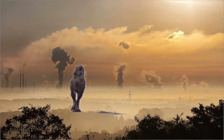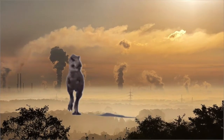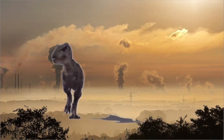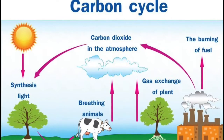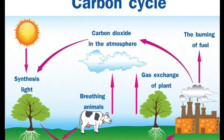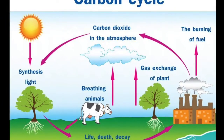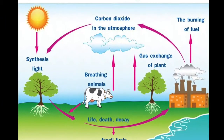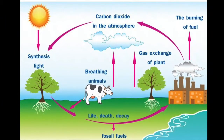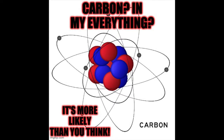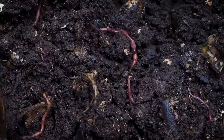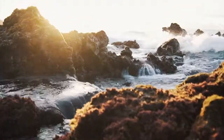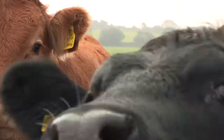Carbon in my dinosaurs — it's more likely than you think. The carbon cycle is vital to our everyday life. All living creatures contain carbon, and so does some inorganic material. Carbon is the fourth most abundant element in our universe, and you can find it in rocks, air, plants, animals, soil, fossil fuels, and the ocean.